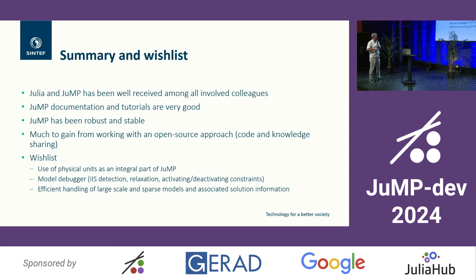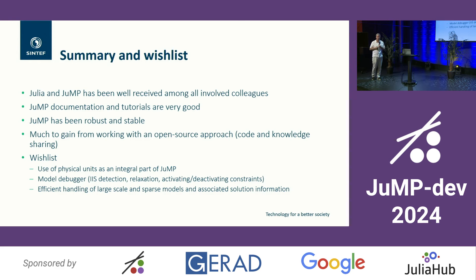A short wish list: use of physical units as an integral part of JuMP — I see it's on the roadmap, so thank you. A model debugger would be nice — we often get infeasible models. There's a good tutorial by Oscar, but could there be some tools where you throw in an infeasible model and can do a lot of options: getting IIS sets, turning constraints off and on, or relaxation. There's a lot of functionality in JuMP, but it would be nice if it was exposed in a single package, easy for users to use. Efficient handling of large-scale and sparse models and associated solution information should still be a focus before we're going into truly large-scale models.